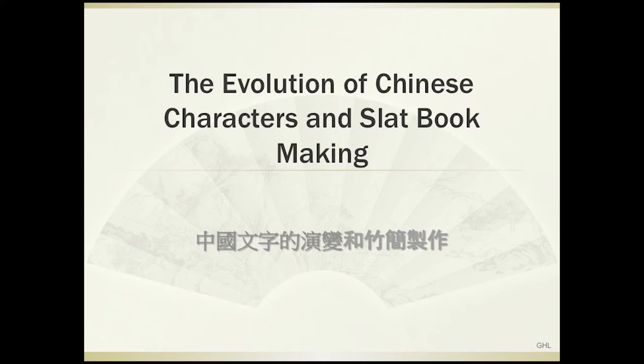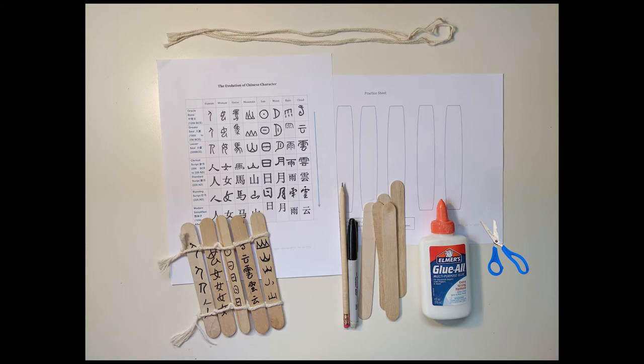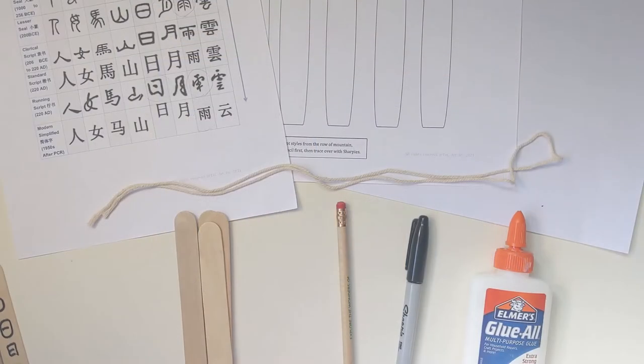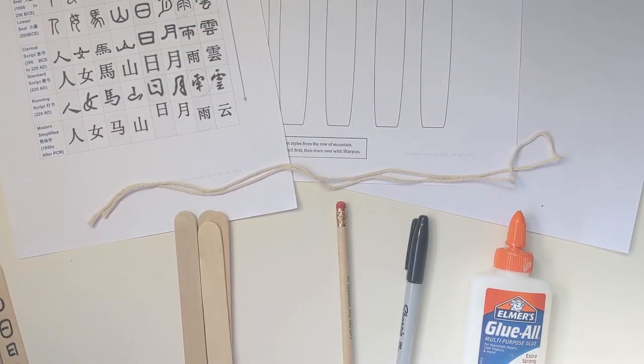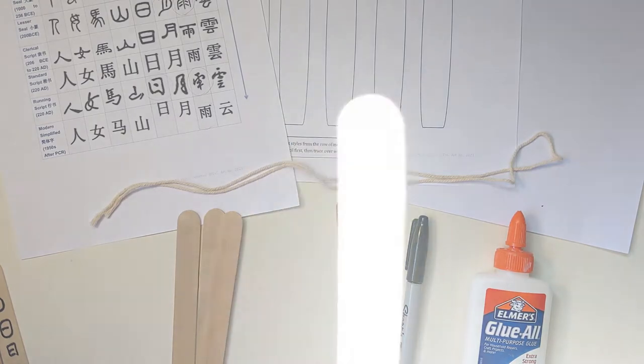Hello my friends, welcome to our Asian China workshop for project number one, the evolution of Chinese characters and slab bone making. These are the supplies you need, but just in case if you don't have this kind of white tongue depressor, you can search for your recycling bin.